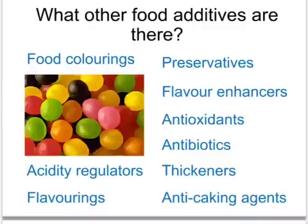However, flavourings may not be natural to the particular food. For example, the food colouring found in orange squash is often derived from carrots. You could say it's not an artificial colouring because it hasn't been made in a factory; however, it isn't natural to orange squash.